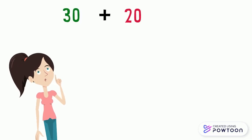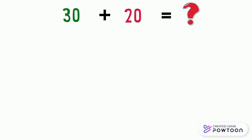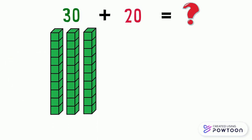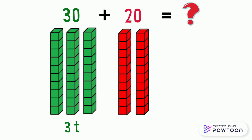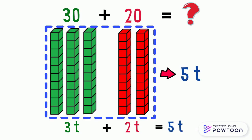What is 30 plus 20? In the number 30, there are 3 tens. And in the number 20, there are 2 tens. So it gives us 5 tens. 3 tens plus 2 tens equals 5 tens. So, 30 plus 20 equals 50.